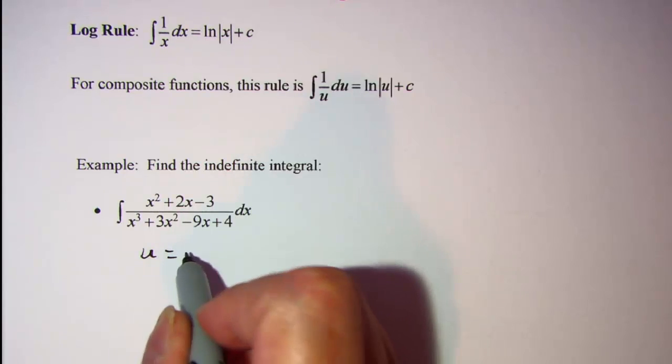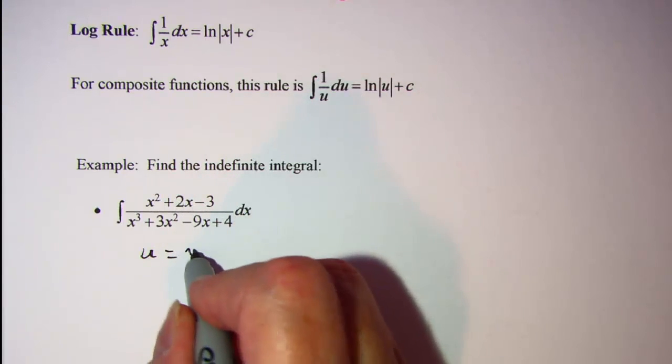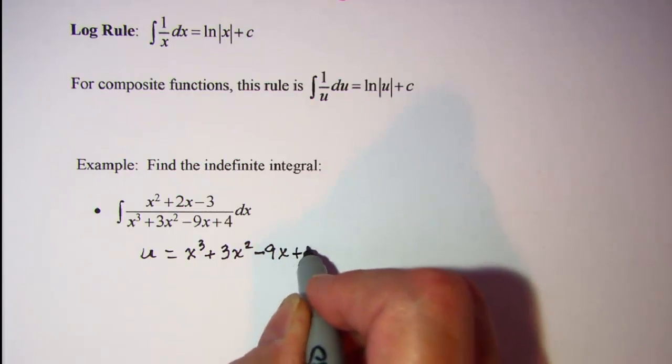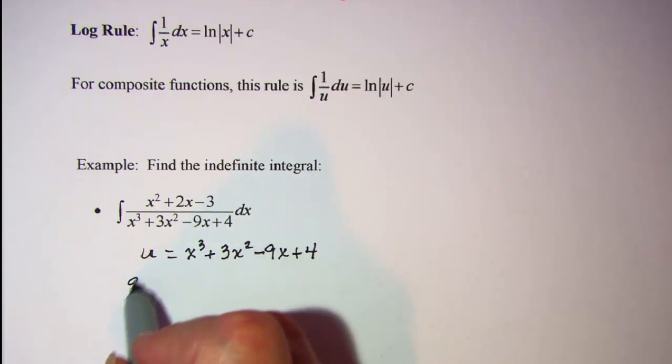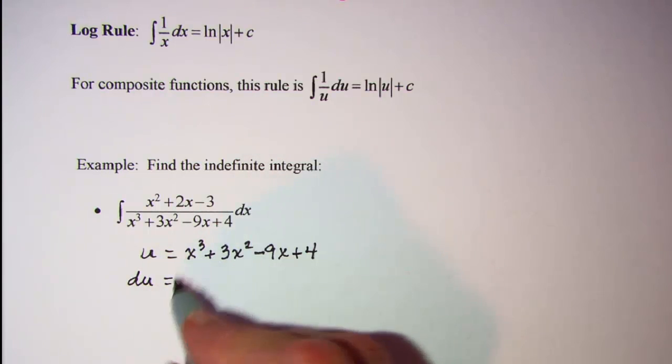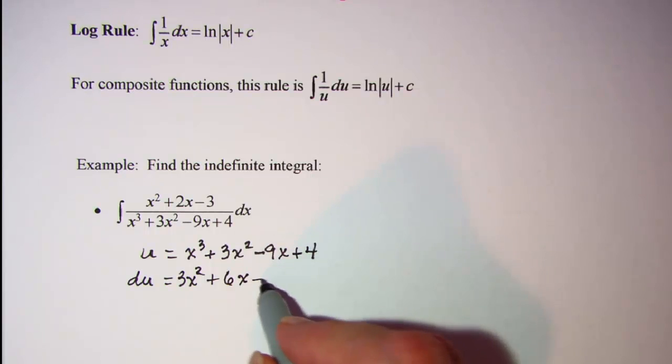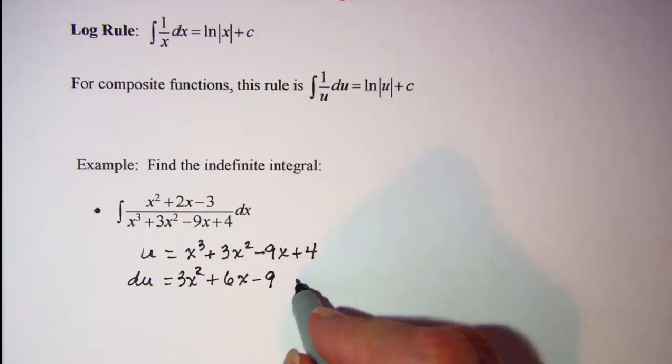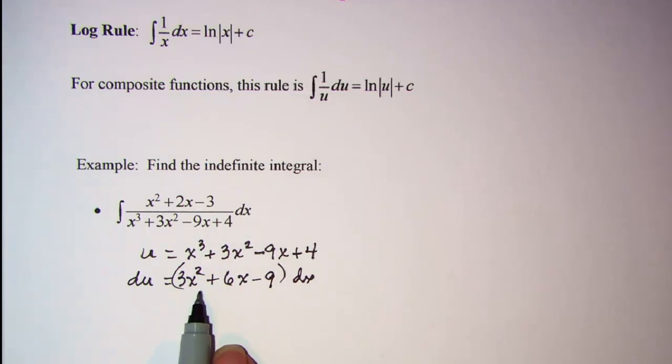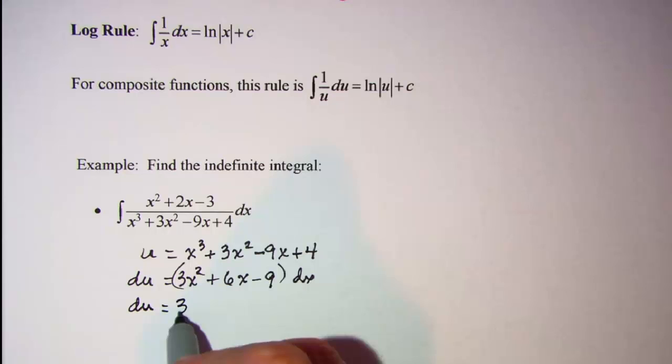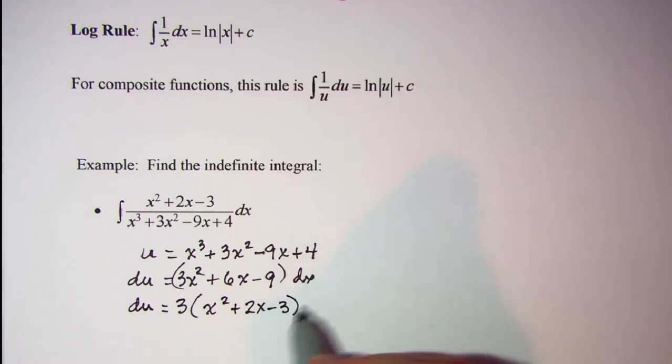We'll let u equal x cubed plus 3x squared minus 9x plus 4. The derivative, du, equals 3x squared plus 6x minus 9 dx. This has a common factor of 3 in all terms which I'm going to factor out.